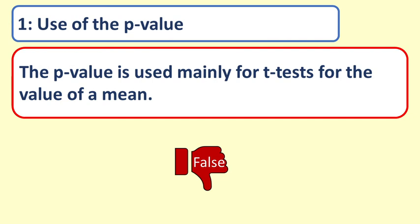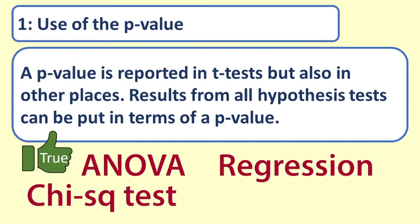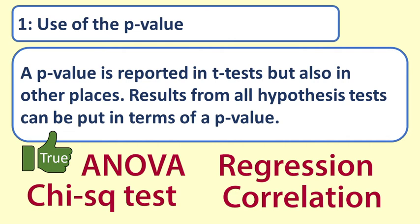False. A p-value is reported in t-tests but also in other places. Results from all hypothesis tests can be put in terms of a p-value. P-values are reported for analysis of variance, regression, chi-squared test, correlation, difference of proportions and many more statistical tests.